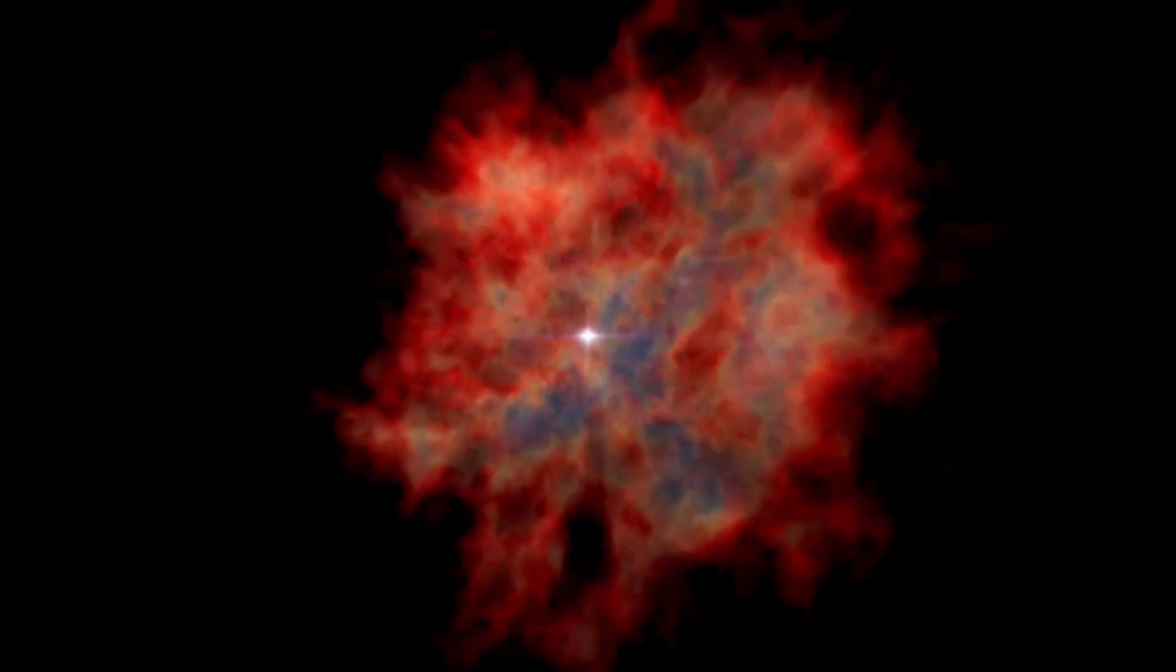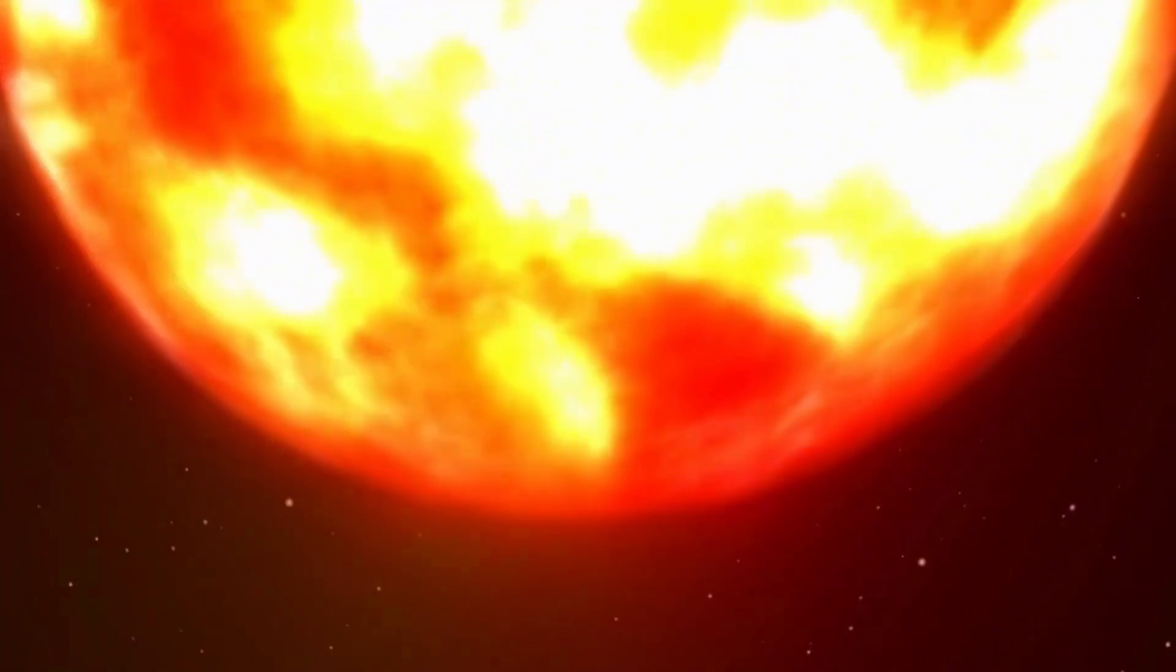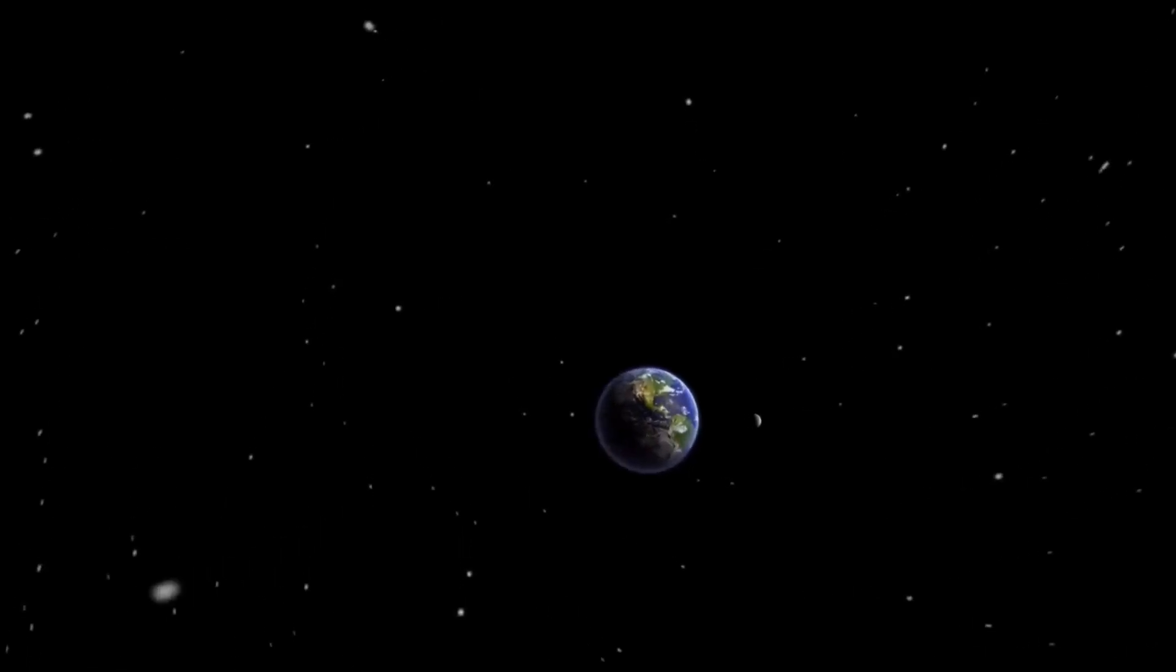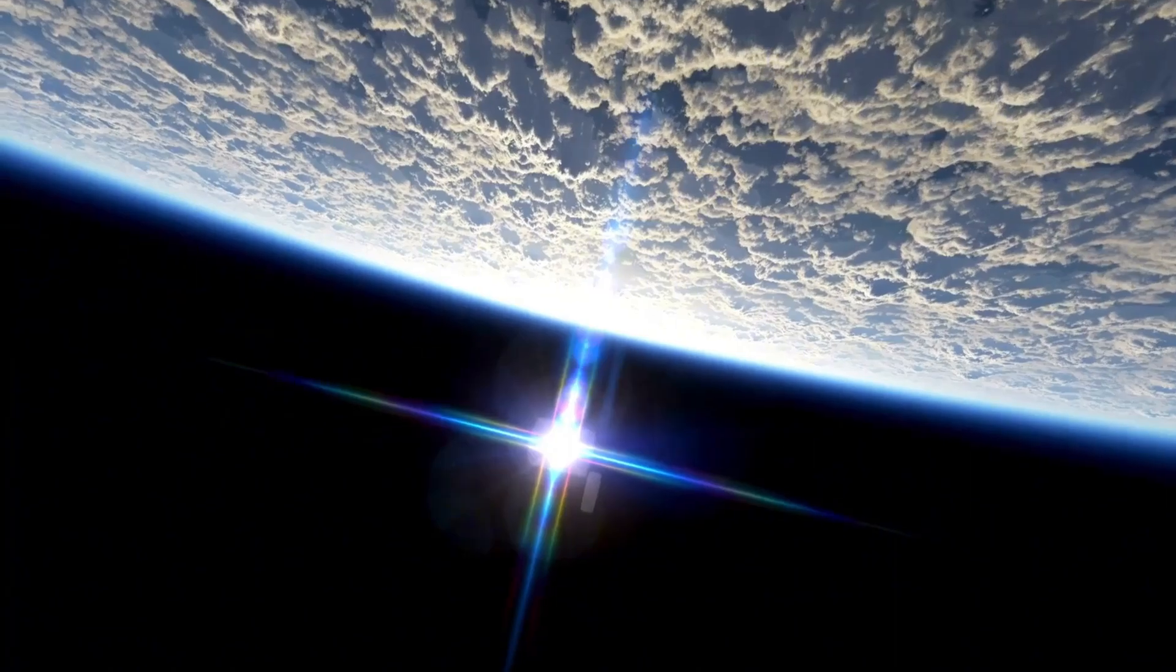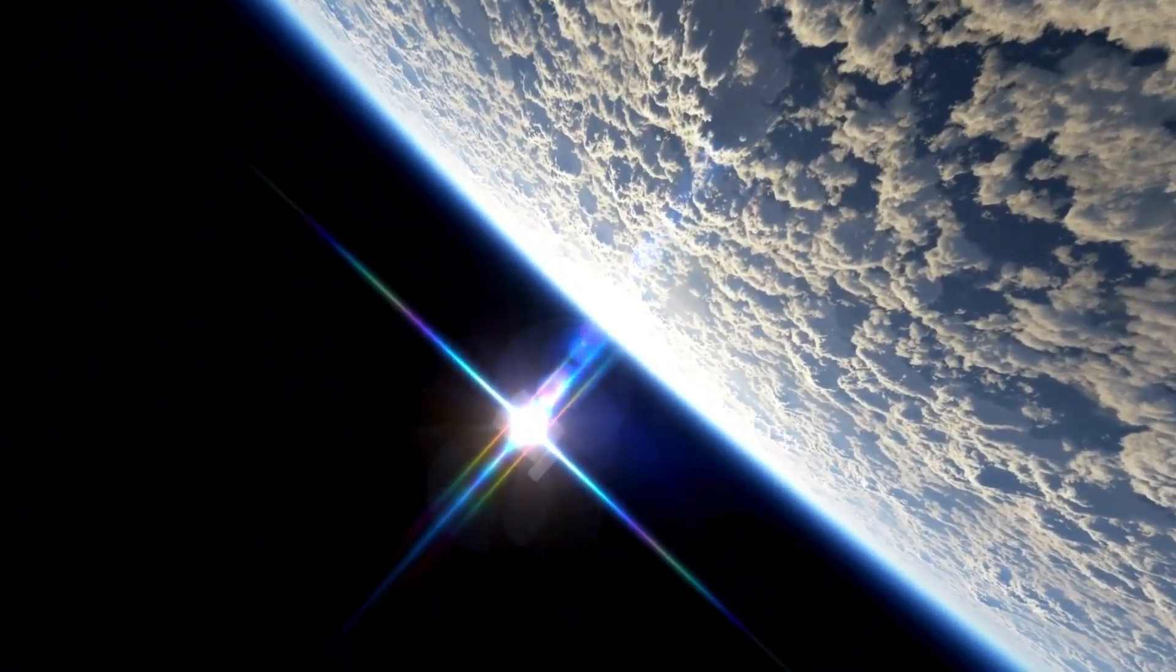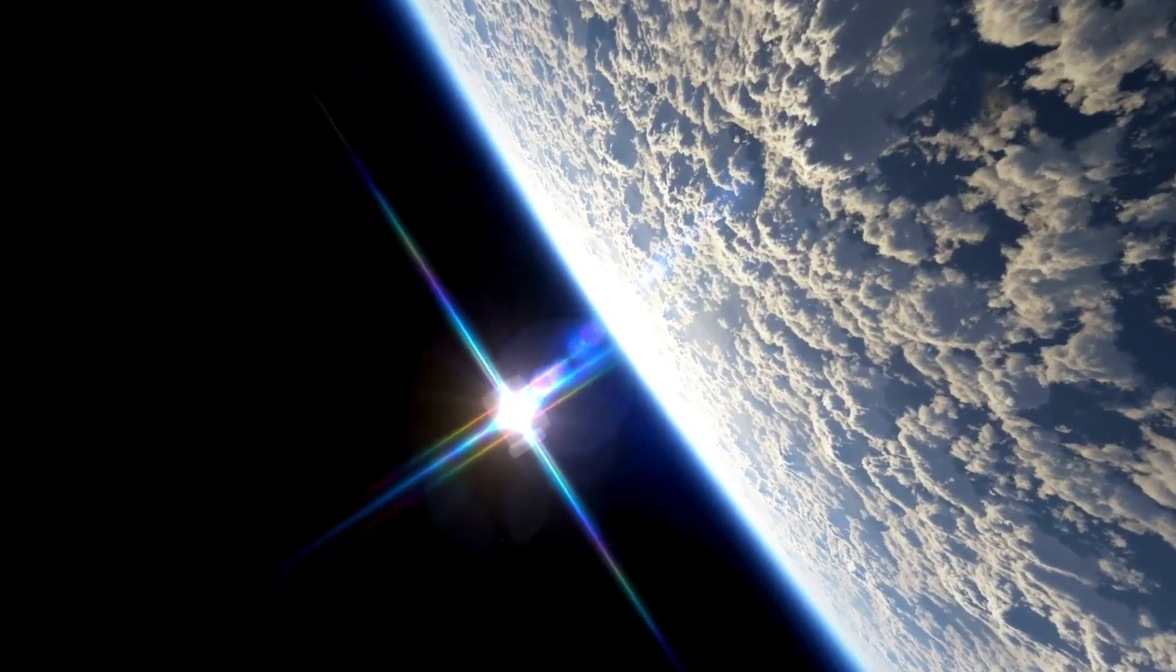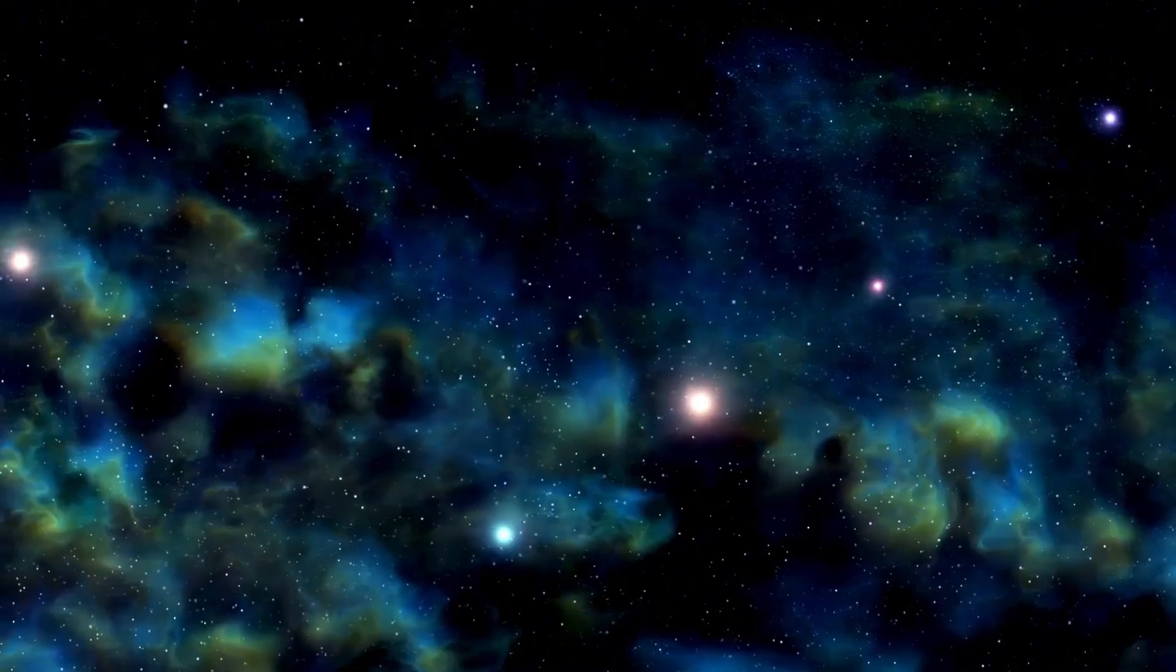Alpha Orionis, easily recognized by its deep crimson hue, holds the title of being the largest and most radiant star in the Orion constellation. With the aid of advanced tools such as NASA's Hubble Space Telescope, astronomers have closely observed its behavior, particularly in 2019, when it experienced a dramatic loss of mass, a phenomenon that is considered rare for stars of this type, raising alarms across the scientific community.